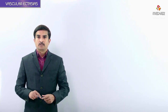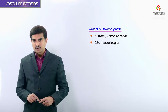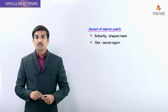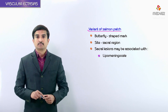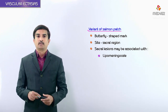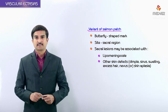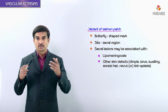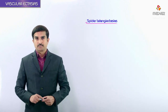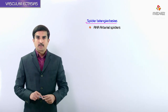A variant of the salmon patch is known as the butterfly-shaped mark, which can occur in the sacral region. Sacral lesions may be associated with other conditions like lipomeningocele. When another skin defect occurs — such as a dimple, sinus, swelling, excess hair, nevus, or skin aplasia — these are more commonly associated with butterfly-type sacral lesions.